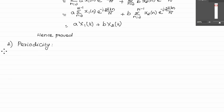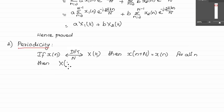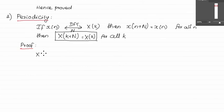Next let us see the periodicity property. If x(n) when taking an N-point DFT equals X(k), then x(n+N) = x(n) for all n, and X(k+N) = X(k) for all k. Now let us see the proof. DFT of x(n) is given by X(k) = summation from n=0 to N-1 of x(n)·e^(−j2πkn/N).